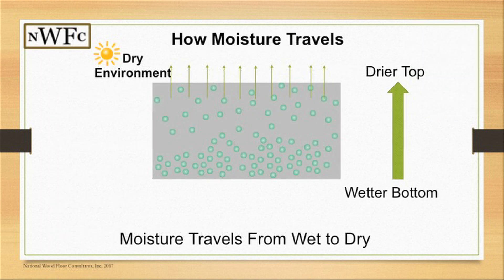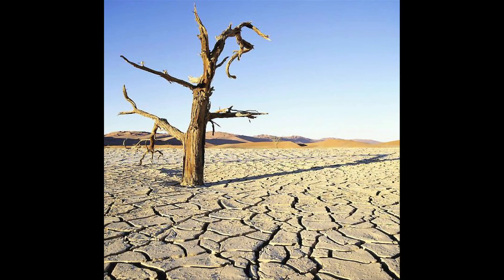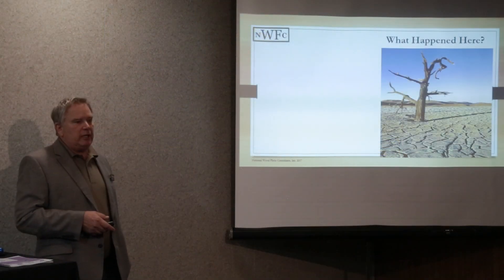We start by asking a simple question: how does moisture travel? In a dry environment with the sun baking down on a floor, it's going to be drier on the surface and wetter on the bottom. Looking at this desert river bottom, you can see what happened to the dirt — it cracked. Why did it crack? It dried up.